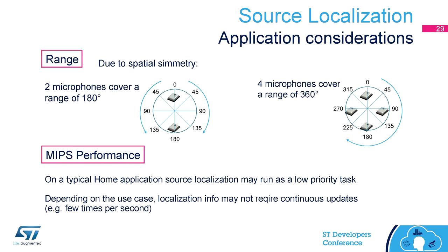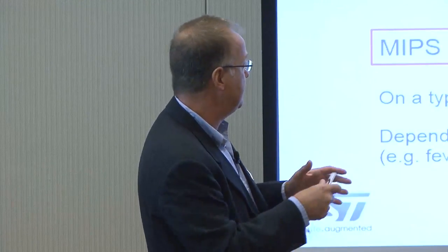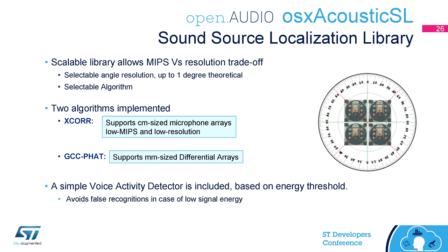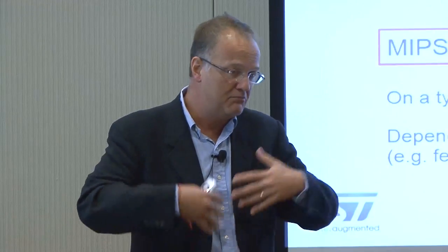If you want to detect a range of 360 degrees, you may do so with four microphones — I invite you to use four microphones if your system is similar to the Amazon Alexa, placed in the middle of a room with detection needed all around it. Regarding MIPS: if you need to detect the position of a human speaking to a machine, the human is not changing position every 20 milliseconds, so you can run this task as a low priority task, perhaps every one or two seconds, whenever the system has time.